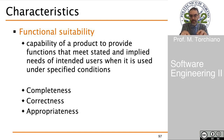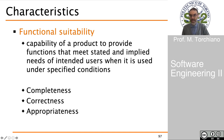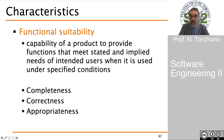Functional suitability can be specified into three further sub-categories: completeness, correctness, and appropriateness. Completeness focuses on the ability to provide all required functions; correctness focuses on the capability that the provided functions are delivered in the correct way; and appropriateness focuses on the capability of the software to provide functions in a way that is appropriate for the users.